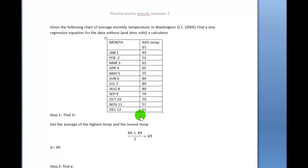To find D you take the average of the highest temperature - you add the lowest y value and divide by 2. So you get 89, which is the highest y value from July or August, add 49 degrees from January, divide them by 2, and you get a center line of 69 degrees. So D equals 69.